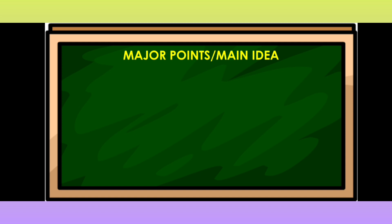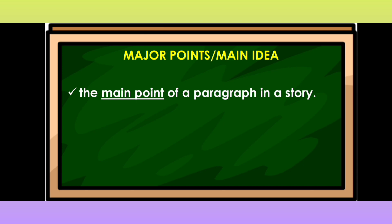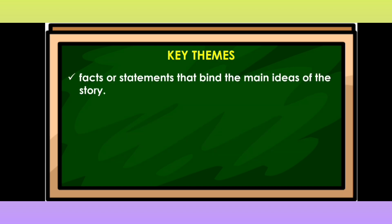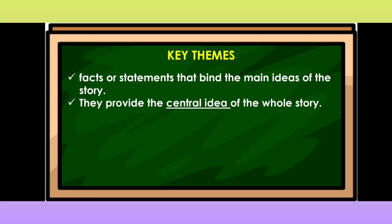What do we mean by major points or main idea? Major points or main idea is the main point of a paragraph or story. When we say main point, it is the main idea or central thought that tells the reader what the text is all about. When summarizing a paragraph, it is most likely a one-sentence major point. Key themes is a fact or statement that binds the main ideas of the story and provides the central idea of the whole story.